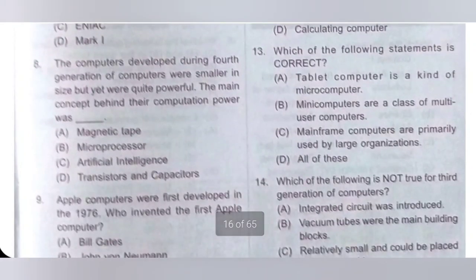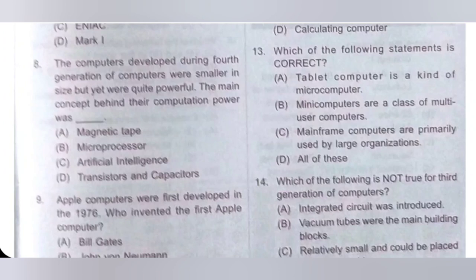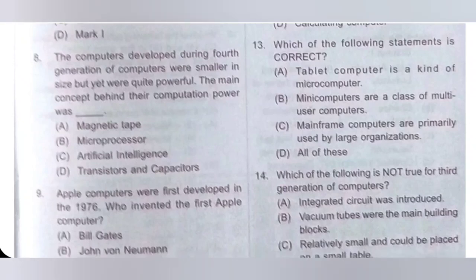8th question: The computers developed during the 4th generation were smaller in size but quite powerful. The main concept behind their computation power was dash. Options: A. Magnetic tape; B. Microprocessor; C. Artificial Intelligence; D. Transistors and Capacitors. Option B is correct — the main concept was the microprocessor, which contains all or most of the CPU functions and acts as the engine when you turn your computer on.